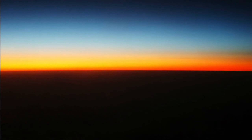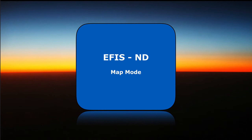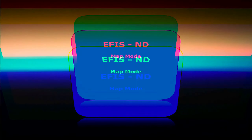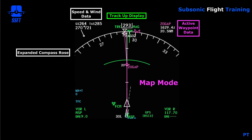Our briefing today will cover the Electronic Flight Instrument System, or EFIS. We're looking at the ND navigation display and specifically the map mode of the ND. The map mode is the mode we use most frequently. On the EFIS control panel you can select one of four modes, and the map mode is the one we're looking at now.